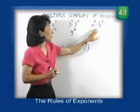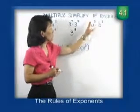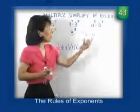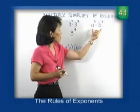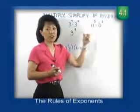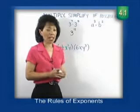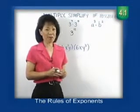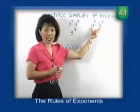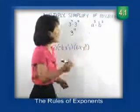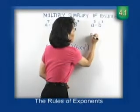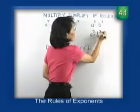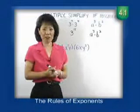Let's look at our third one. We have a to the third times b to the second. Remember, the rule on multiplying these monomials is that the bases must be the same. Notice the first base is a, the second base is b — very different from one another. Since they're different, we have to leave this one as is. We cannot simplify. It's already in simplified form.